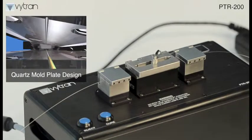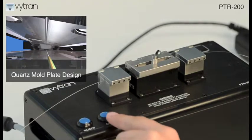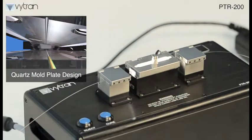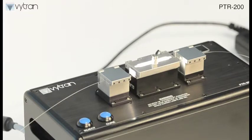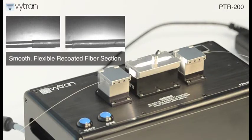Our recoaters incorporate a unique quartz mold plate design to ensure a high quality recoat finish. Since each mold lasts over 10,000 recoats, PTR-200 units are well suited for manufacturing. They produce a smooth, flexible, recoated fiber section able to fit into small spaces for high density packaging.